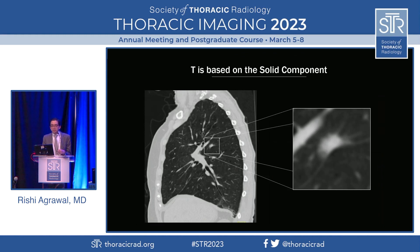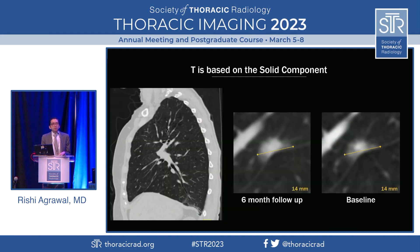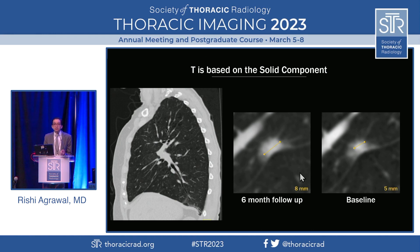For example, here's a patient with a right upper lobe tumor. You might say it's 14 millimeters, which would make it T1B. But in fact, the solid component is only eight millimeters, which makes it T1A. Another reason to measure the solid component: if you only measure the entire lesion, it can give a false sense that a lesion is not growing. The same lesion six months earlier was the same overall size, but the solid component increased from five to eight millimeters, which is significant.